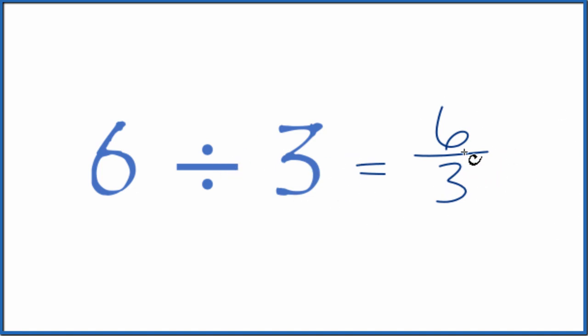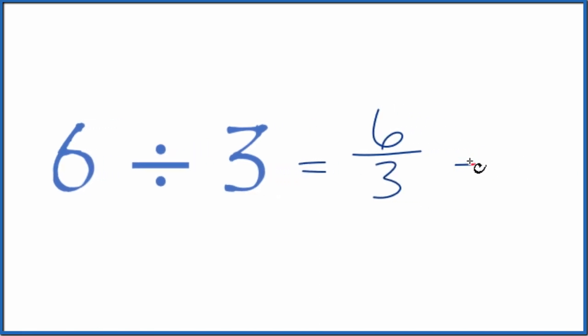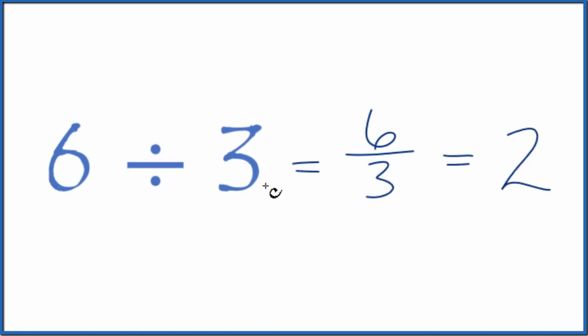This is an improper fraction. We could simplify this. 3 goes into 6 two times, so we could just call this 2. 6 divided by 3 is 2. And this is probably one you should just memorize. 6 divided by 3 is 2.